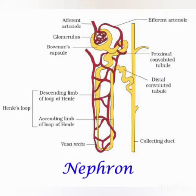The aorta leaves the heart from the left ventricle and divides into many arteries, which go into different organs and provide oxygen to the cells. The artery first divides into capillaries where exchange of gases takes place, and then the capillaries join to form veins. There is an artery named the renal artery — 'renal' meaning anything related to the kidney — and it brings blood to the kidney.